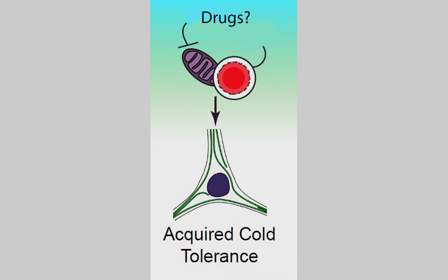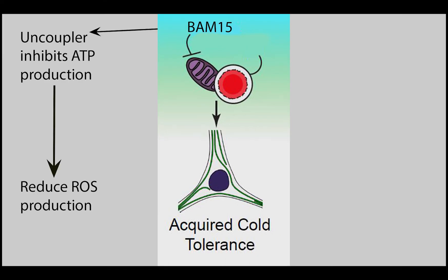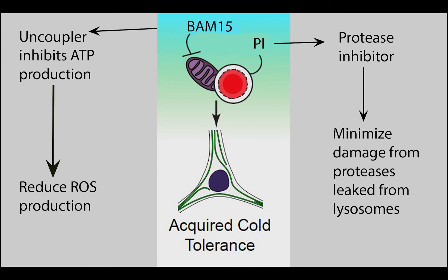Looking for ways to pharmacologically prevent this cold-induced damage, we identified two drugs that alter the course of microtubule degradation in non-hibernators. The first one is BAM-15, an uncoupler that inhibits the production of ATP in mitochondria, essentially slowing mitochondrial activities and the production of reactive oxygen species. The second one is a protease inhibitor cocktail to minimize damage caused by the leaked proteases from the lysosomes.